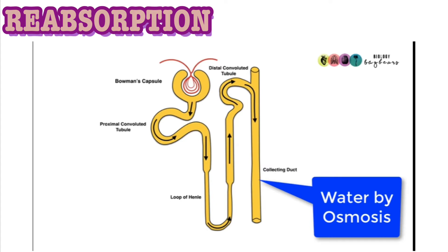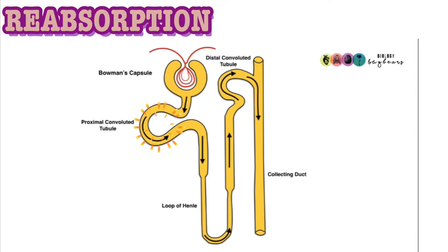To recap, reabsorption of the materials took place in the proximal convoluted tubule, loop of Henle, the distal convoluted tubule, and the collecting duct of the nephron at the cortex and the medulla of the kidney.